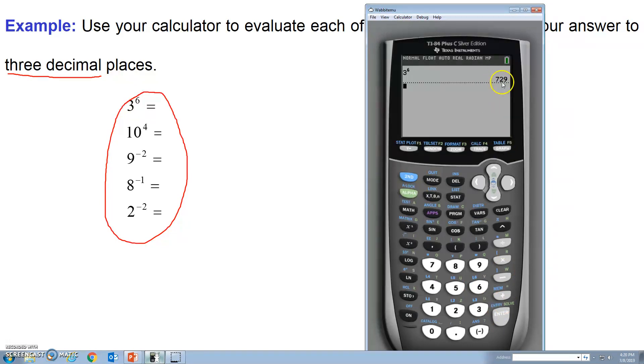And so to three decimal places, this would be seven, two, nine, point zero, zero, zero. Okay. So now we'll do the next one. It says ten to the four. So we get one, zero to the power of four. And away we go. And so this would be ten thousand, point zero, zero, zero. So it's important to include the three decimal places.